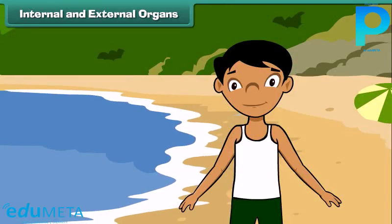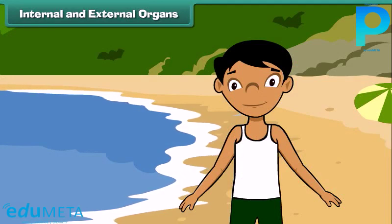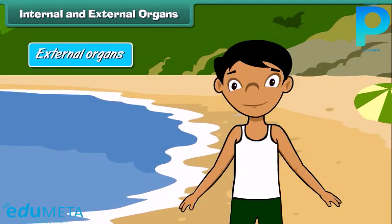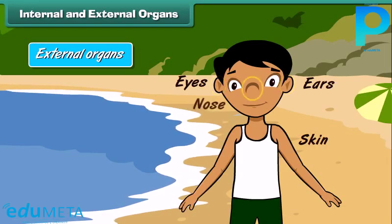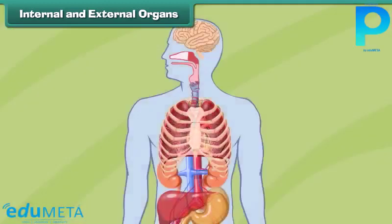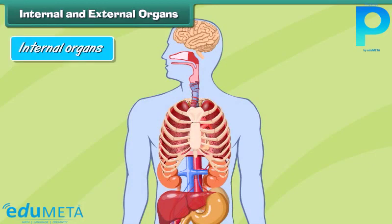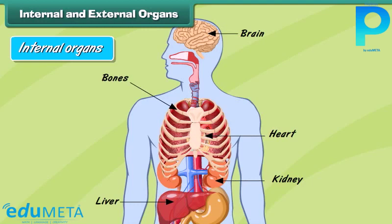The organs that are located on the exterior of the human body and are visible to the human eye from outside are called external organs — for example, skin, eyes, nose, and legs. The organs that are located inside the human body and not visible to the human eye from outside are called internal organs — for example, heart, liver, kidneys, and brain.